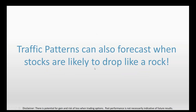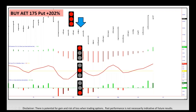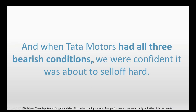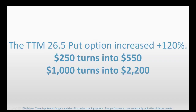Traffic patterns can also forecast big down moves. When Aetna had all three bearish conditions confirmed, we recommended buying the AET 175 puts — up 202%: $250 grows to $755, and $1,000 grows to $3,020. When Tata Motors had all three bearish conditions, this one kind of fizzled to the downside — still a winner but a smaller one. We recommended buying the Tata Motors 26.5 puts, and those were only up 120%: $250 grows to $550, or $1,000 turns into $2,200.